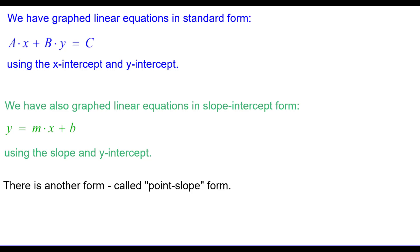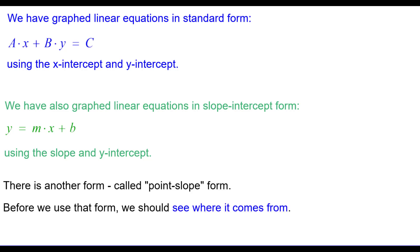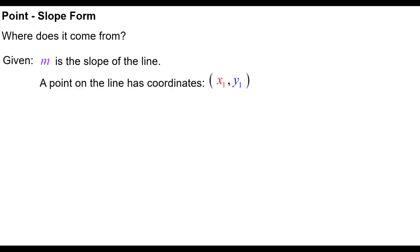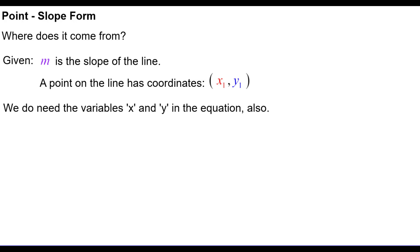There is another form called point-slope form. Before we use that form, we should see where it comes from. Let's say you are given the slope of a line, represented with the variable m, and a point on the line has some coordinate x sub 1, y sub 1. We will also need the variables x and y in the equation.